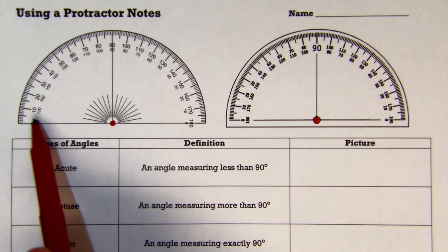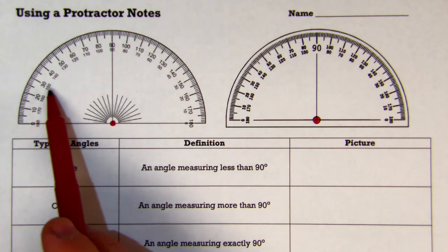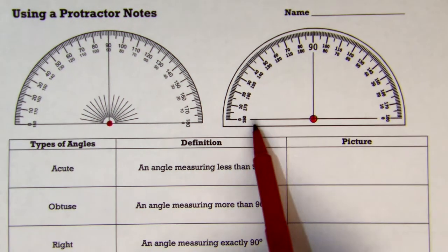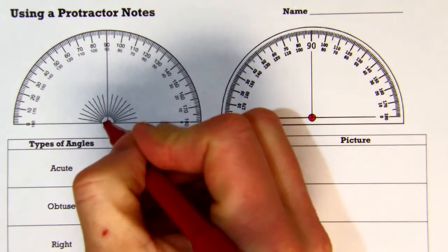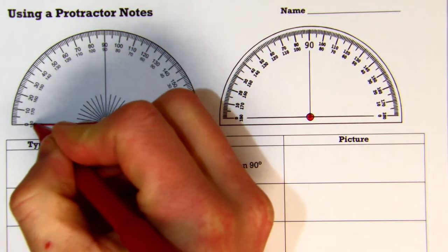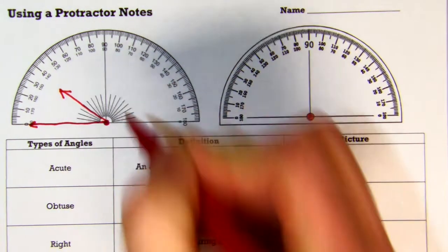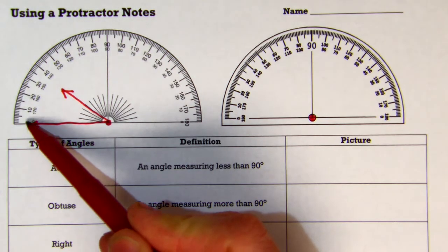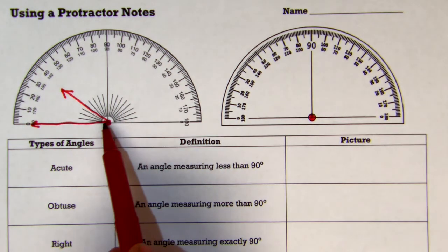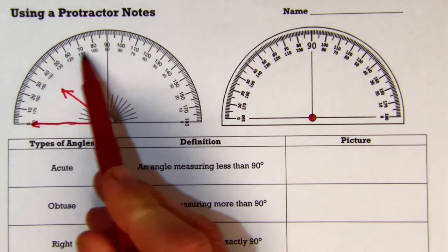This one we have a 0, 180, 10, 170, 20, 160, 30, 150, and so on. And this one has the same thing. If your angle is pointing this way, you're going to want to make sure you use your outside number. You want to go from 0 on up. So whatever the angle is going on the bottom here direction is, that's the 0 you want to start counting from.